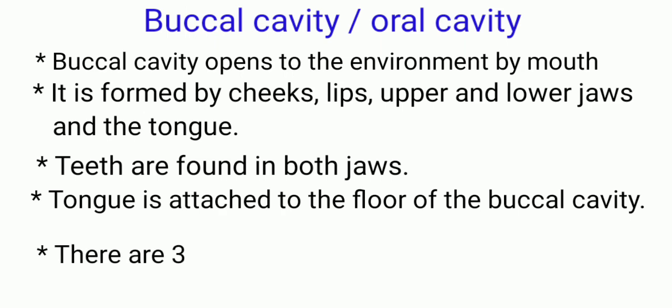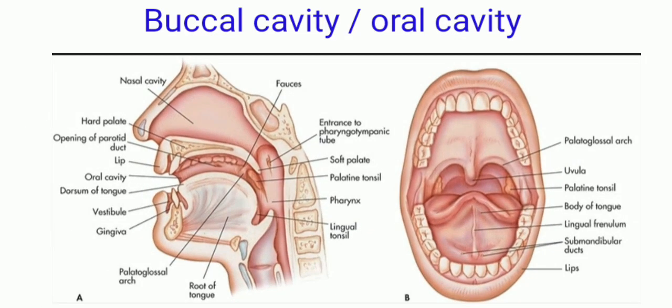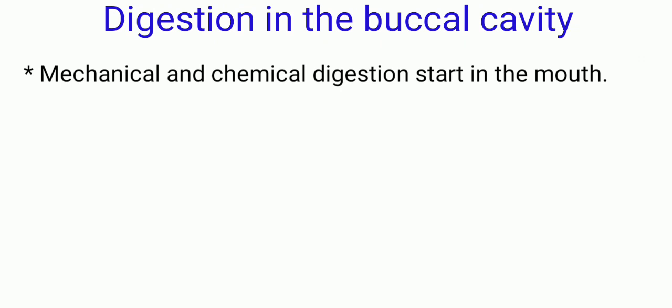There are three pairs of salivary glands that secrete saliva. Saliva contains water, mucin, solutes, salivary amylase, and metabolic wastes. The water and mucin in saliva moisten, soften, and lubricate dry food so that it is more easily chewed and swallowed. The enzyme salivary amylase breaks down starch into the soluble sugar maltose. Saliva also moistens the mouth, tongue, and lips, which facilitates talking.